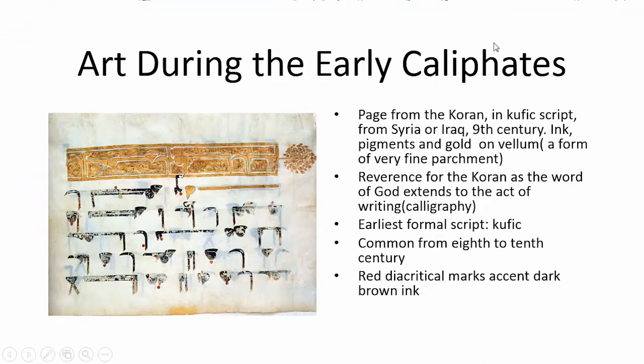Here's a very early script — from the time of the early caliphates, those caliphs who began Islam directly after Muhammad died. This is a page from the Quran in Kufic script, probably from Syria or Iraq, made in the ninth century — 200 years after Islam was founded. It's made out of ink, pigments, and gold on vellum, which is a very fine parchment. It's this reverence for the Quran as the word of God that makes the act of calligraphy an act of worship.